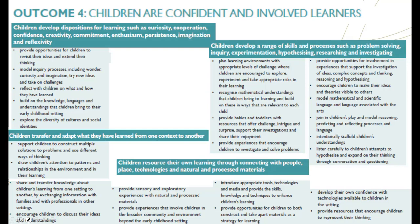Skipping to outcome four: children are confident and involved learners. Looking at that outcome, you can see the strength of science education in it. We develop dispositions — the word 'dispositions' appears in the EYLF, and what it really means is capabilities. In the ACS we call them generic capabilities, and we have seven of them. In the early years we call them dispositions — a disposition is a leaning or a capacity. Those capacities include inquiry processes, wonder, curiosity, imagination, and trying new ideas.